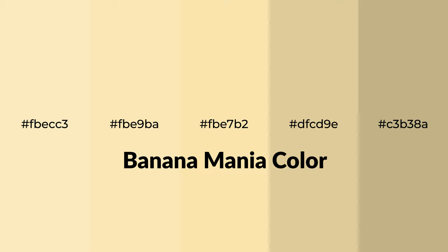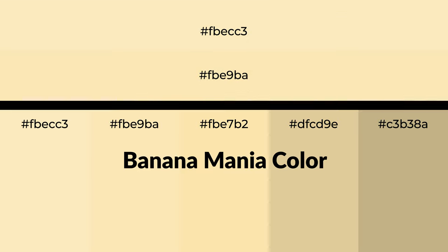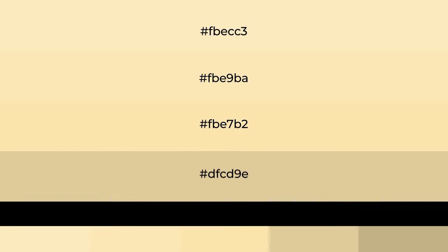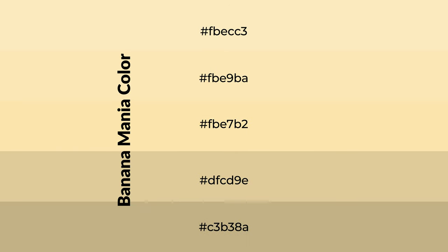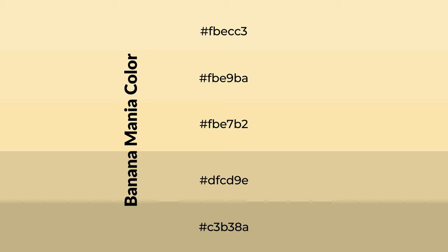Warm shades of banana mania color with yellow hue for your next project. To generate tints of a color, we add white to the color — tints create light and exquisite emotions. To generate shades of a color, we add black to the color, and it is used in patterns, 3D effects, and layers. Shades create depth and drama.